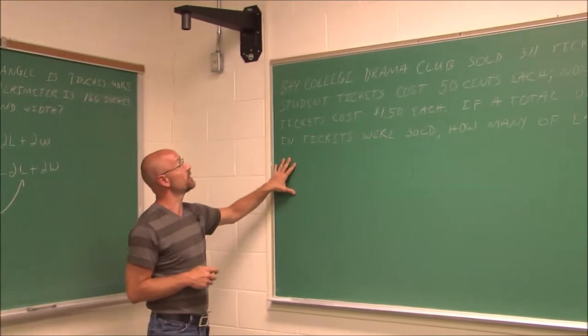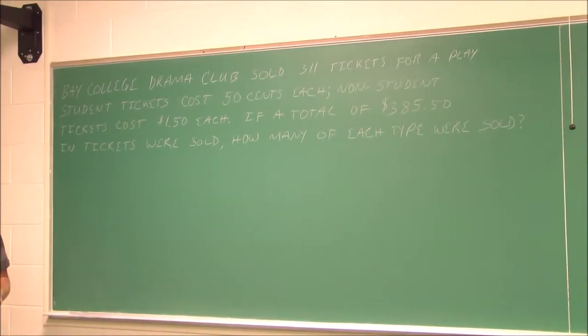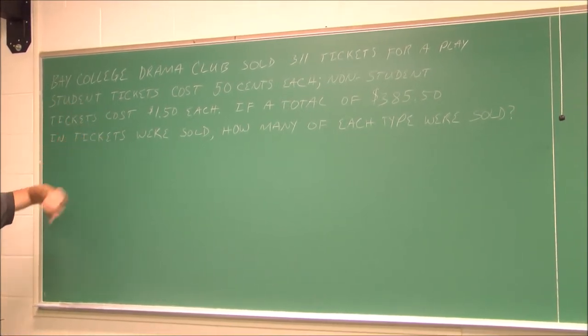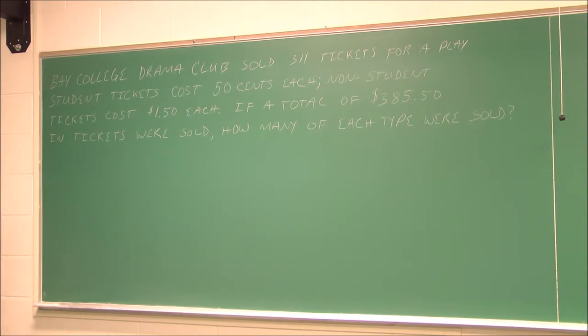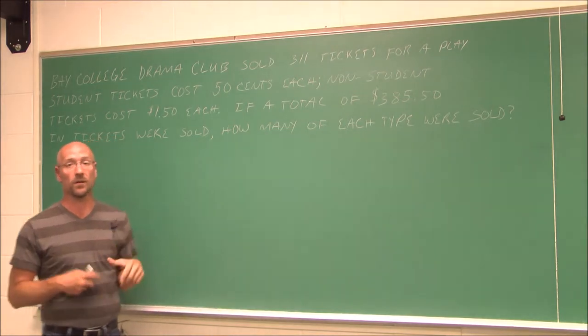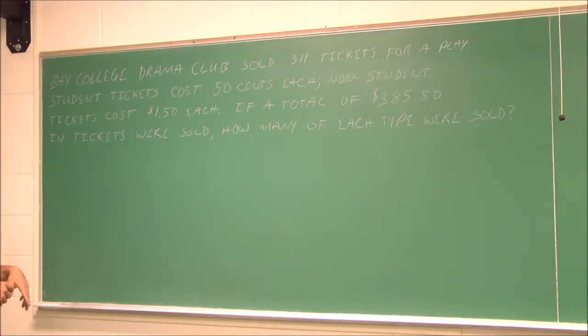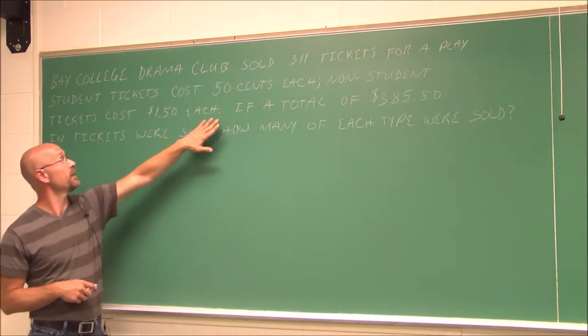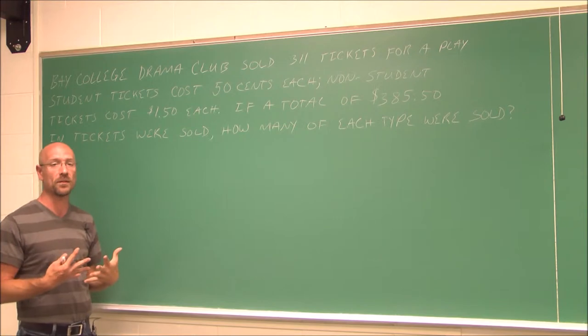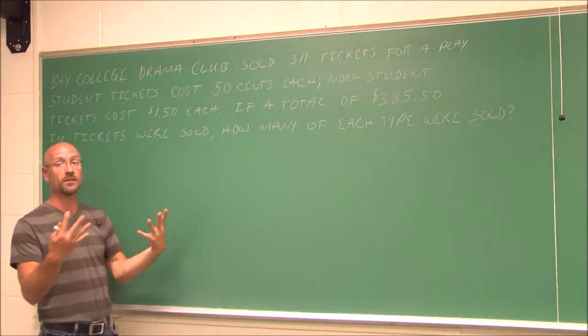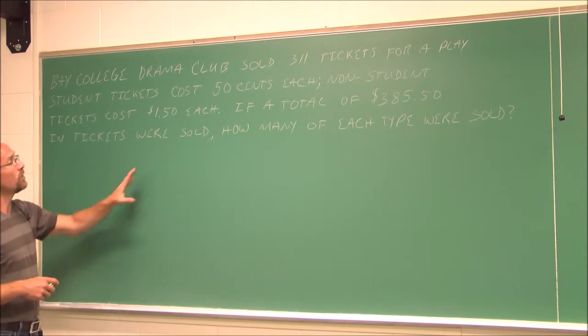Let's look at this one here. It says, Bay College Drama Club sold 311 tickets for a play. Student tickets cost $0.50 each. And non-student tickets cost $1.50 each. If a total of $385.50 in tickets were sold, how many of each type were sold? Hopefully, we're familiar with the terminology here. And I just want to point out, be careful. This says $0.50, this says $1.50. We have to have similar units. Hopefully, we know that $0.50 is $0.5 or half a dollar.